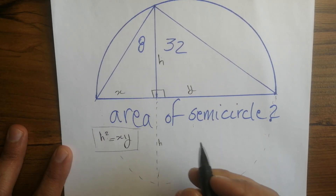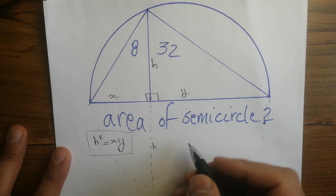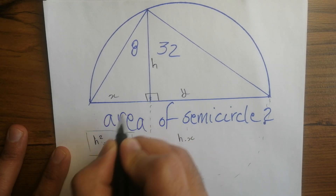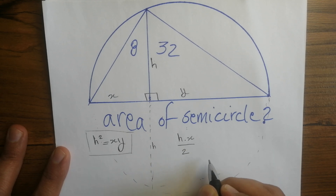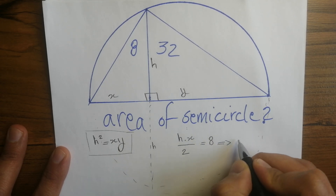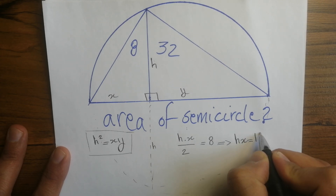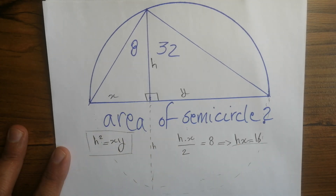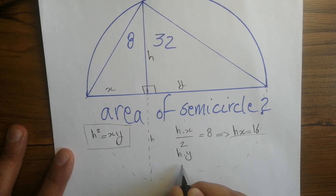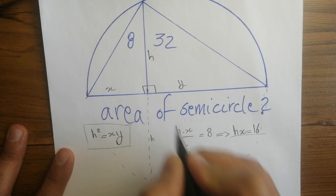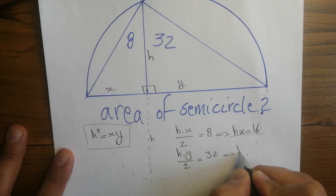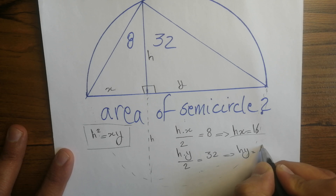Now let's write formulas for the areas of both triangles. For the first triangle: area equals h times x over 2, and this equals 8, so h times x equals 16. For the second, bigger triangle: area equals h times y over 2, and this equals 32, so h times y equals 64.